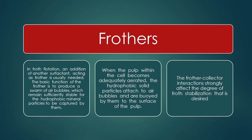Another important chemical agent is the frother. In flotation, an addition of a surfactant acting as a frother is usually needed. The basic function of the frother is to produce a swarm of air bubbles which remain sufficiently stable for hydrophobic mineral particles to be captured by them. When the pulp becomes adequately aerated, froth is formed and hydrophobic particles attach to the air bubble surfaces.